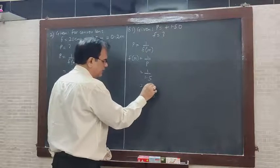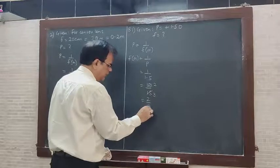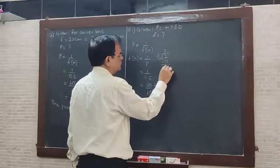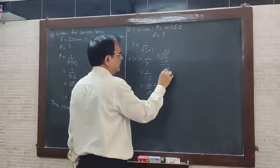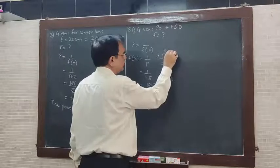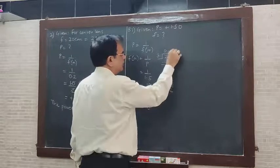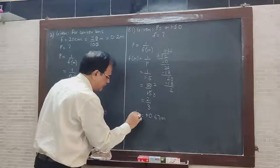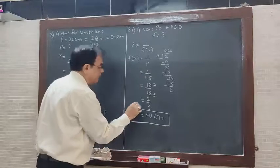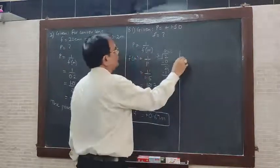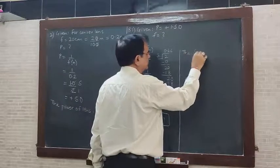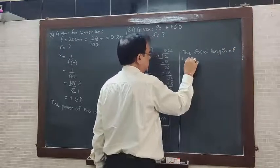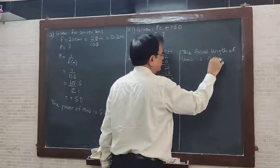Simplifying 10 upon 15: 5 is common, giving 2 upon 3. Dividing 2 by 3: 3 goes 0 times into 2, then 3 sixes are 18 — we get a recurring number. So F is equal to plus 0.67 meters. The focal length of the lens is 0.67 meters.